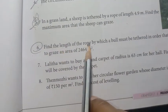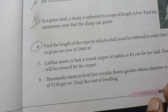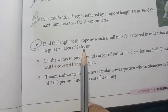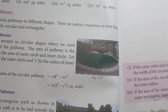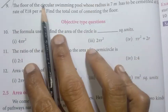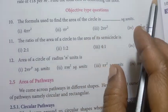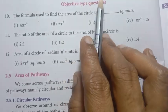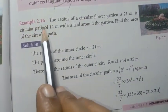Sixth one: find the length of the rope by which a bull must be tethered in order that it may be able to graze an area of 2464 square metres — important question. Ninth one: the floor of a circular swimming pool whose radius is 7 metres has to be cemented at the rate of rupees 18 per square metre — find the total cost of cementing the floor. Important question. Page number 35, Example 2.16 is important.